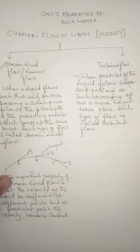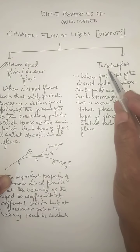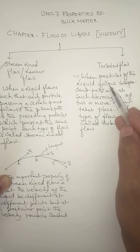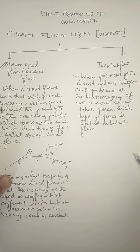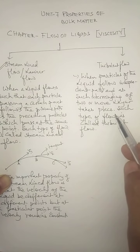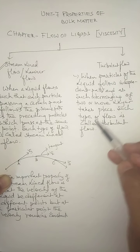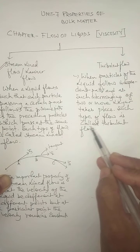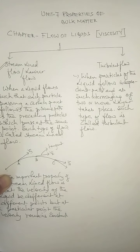Now we go to the next type of flow of liquid — that is turbulent flow. This is just opposite to streamline flow. In this type of flow, the particles of the liquid follow independent paths, and there is intermingling of two or more layers — the layers mix with each other. The particles of the liquid move randomly in all directions, and the path they follow is zigzag. Such type of flow is called turbulent flow, also called zigzag flow.